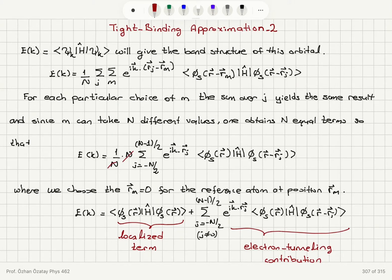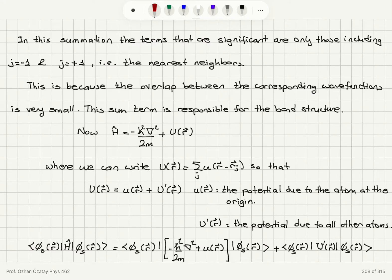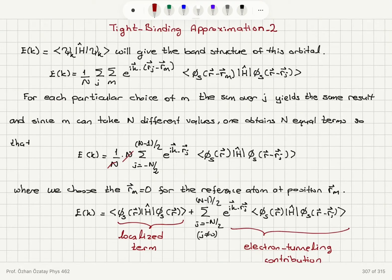We separate this into two terms: j = 0 and j ≠ 0. The j = 0 term corresponds to phi_s, H-hat, phi_s at position r — that is rj = 0 — which is the localized term. For j ≠ 0, only j = −1 and j = +1 (the nearest neighbors) have significant contributions, because the overlap between the corresponding wave functions is very small — they are localized. So we have the localized term plus an electron tunneling contribution due to the overlap between neighboring wave functions.